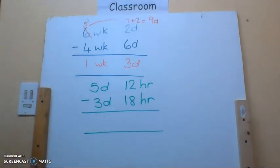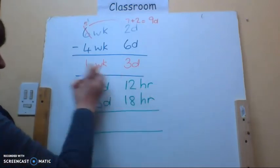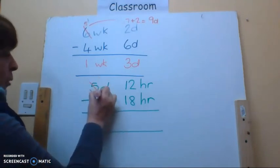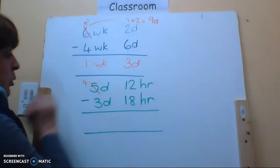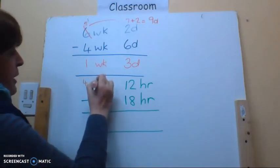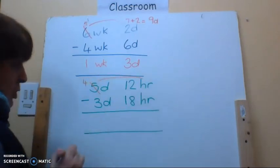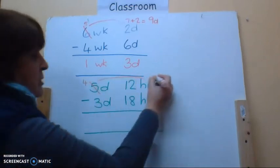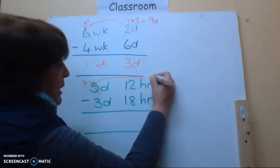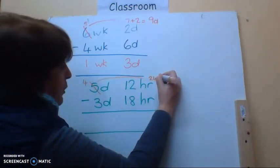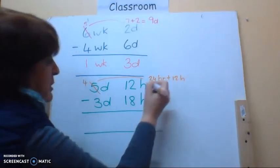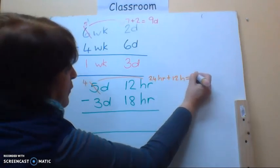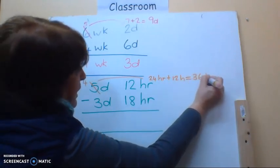Now I cannot say 12 hours minus 18 hours. I need to go over to my days and borrow one day. I'm going to leave him with four days. When I bring my day over to the hours column, he changes. He changes back into what he's made up of, which is 24 hours plus the 12 hours that I have got. So I now have 36 hours.